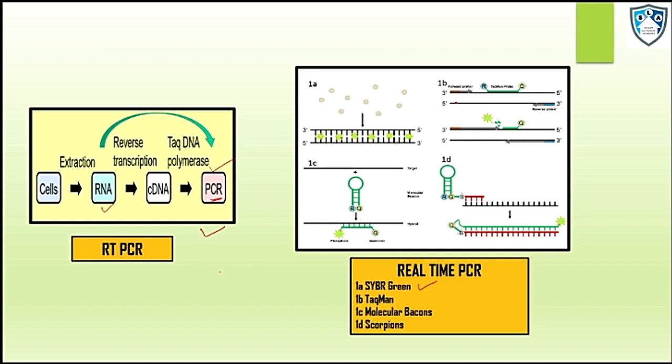The next one we see is the Taqman probes. Basically the use of Taqman probes and Molecular Beacons involves two things: one is a fluorophore and a quencher. When a quencher is just adjacent to the fluorophore, it will prevent the fluorophore from fluorescence.